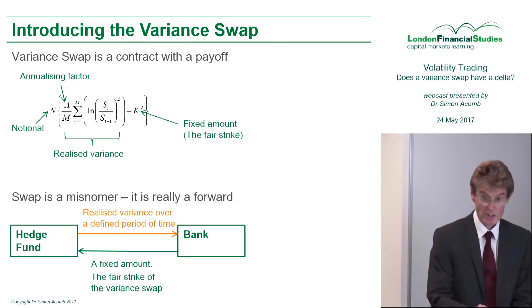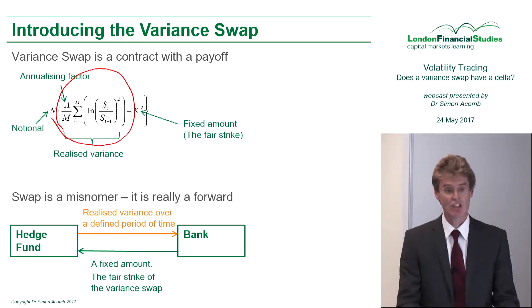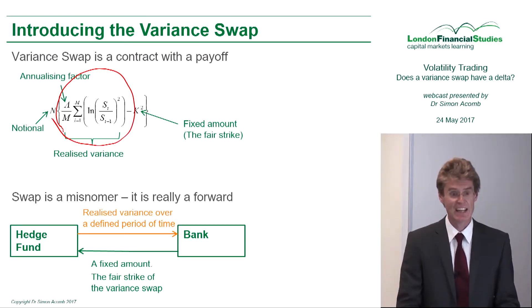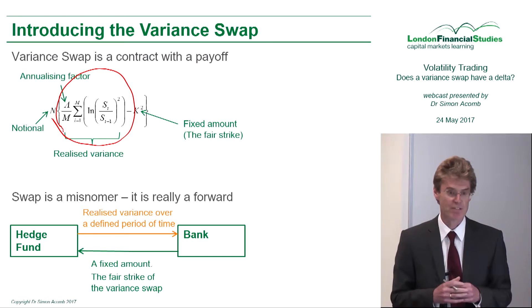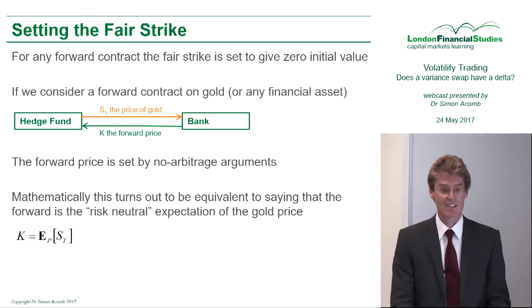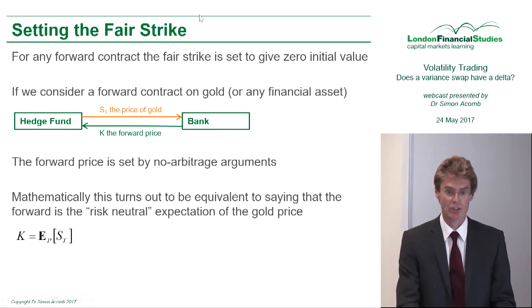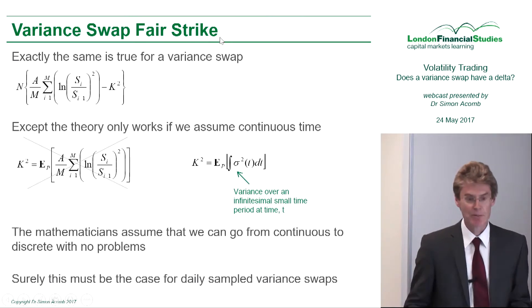One side of this contract pays out this amount here, and this amount is just the realized variance on an underlying over a given period of time. I agree with my counterparty upfront that we will set the forward as the risk-neutral expectation of the price.